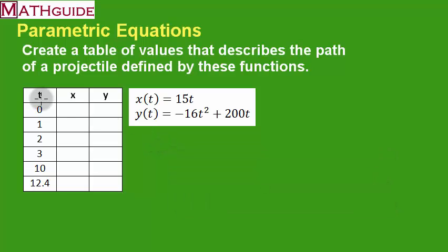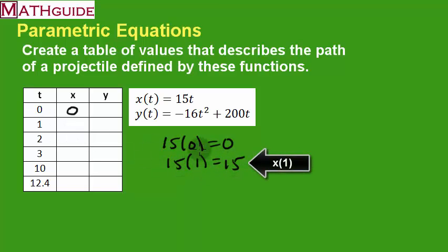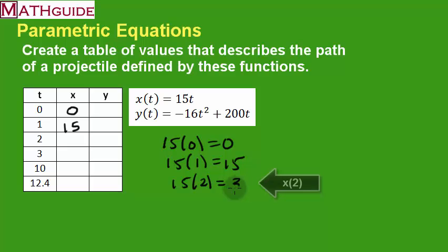For the first value, we're going to put in 0 for x. As a matter of fact, I'm going to calculate the x values first. I'm going to put 15 times 0, which is 0. Then we're going to take 15 times 1, which is the next t value, which is 15. Then we're going to do 15 times 2, which is 30.